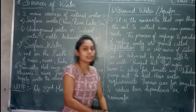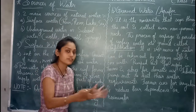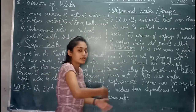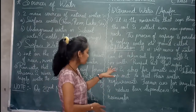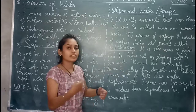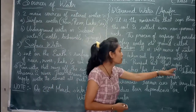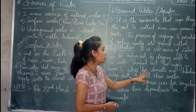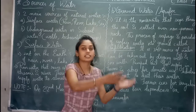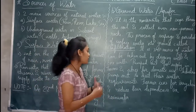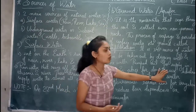Ground water can be accessed by digging a well. If we construct a well, we can accumulate water in it. With bore wells, we can bore into the ground water and then pump it out for supply in towns and cities for domestic uses.